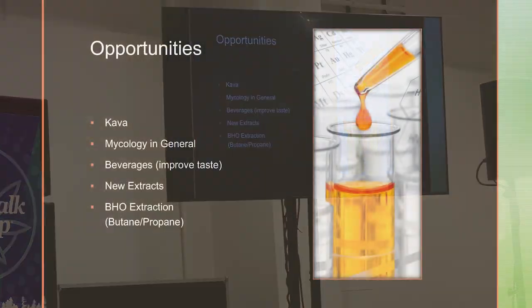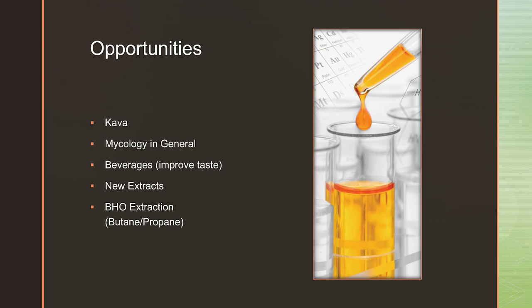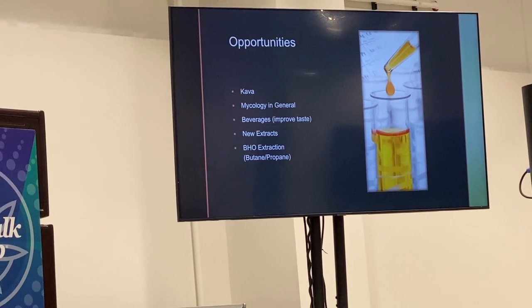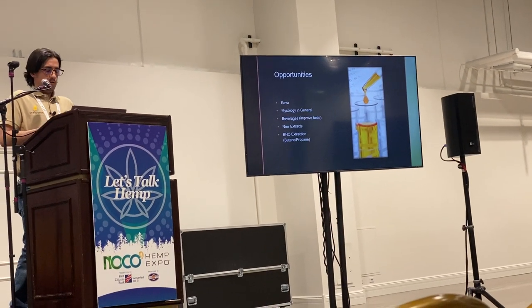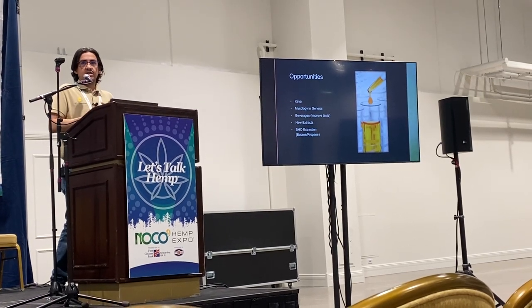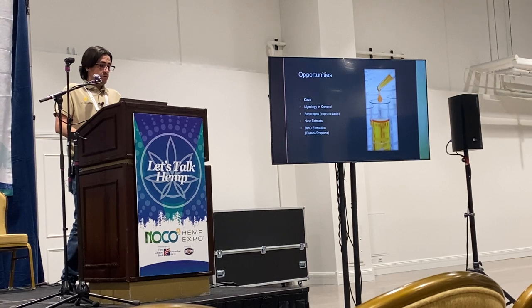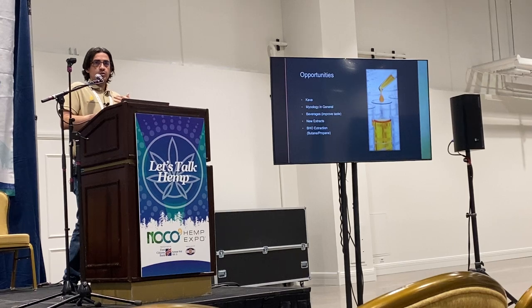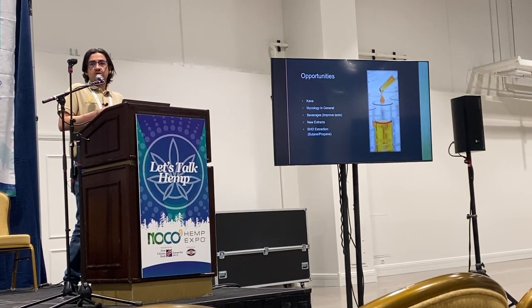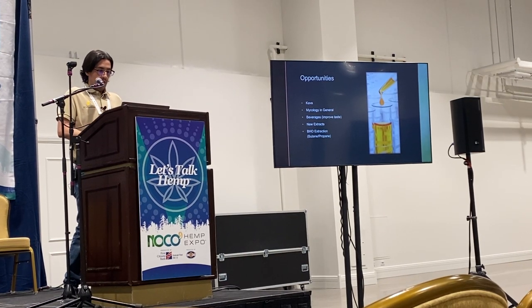Looking at opportunities in membrane filtration: kava, kratom, and botanicals in general have a lot of potential to winterize and make a cleaner product cheaper, faster, and of higher quality. Mycology in general — not just psilocybin-based mushrooms — has a lot of interest, including beverages derived from the mycology industry. We've been involved in projects taking protein from algae for protein drinks. There are new extracts and applications emerging every day. Very soon, there are smart people doing research on deploying membranes with BHO, so you could have a BHO system with membranes incorporated inline instead of using powders for CRC.